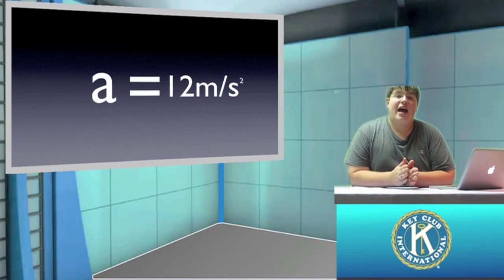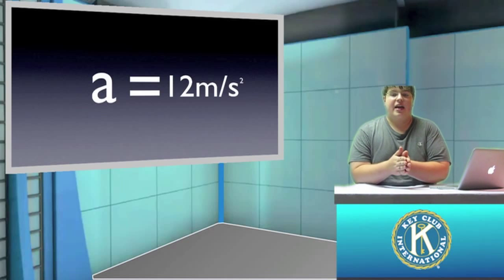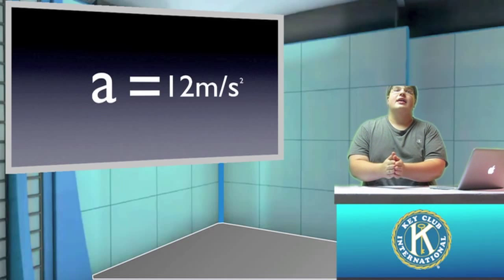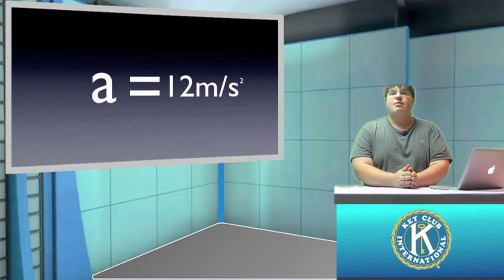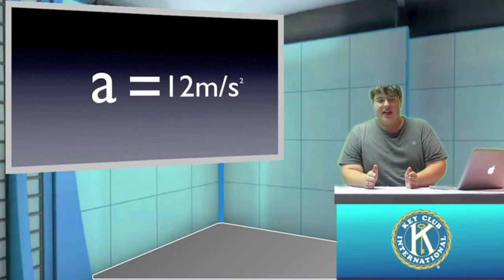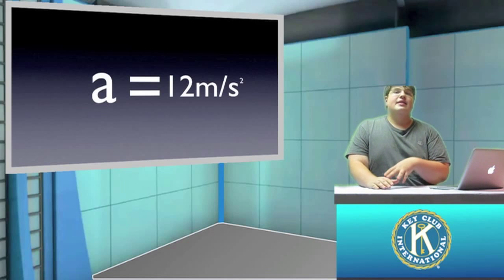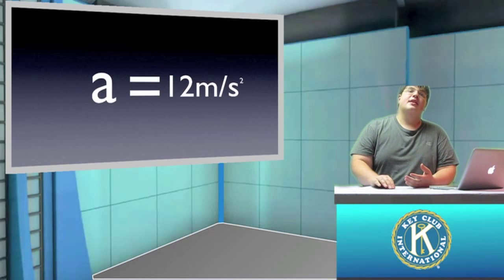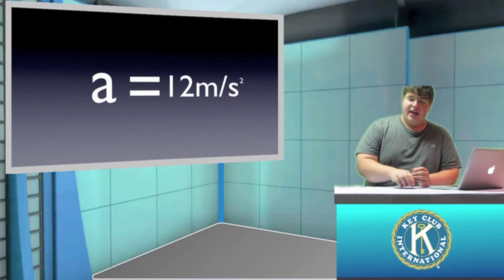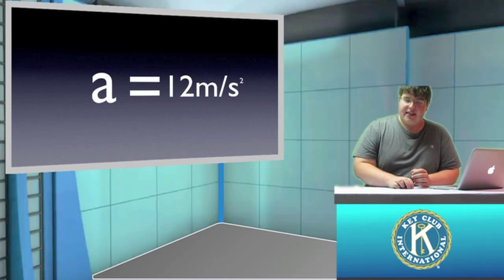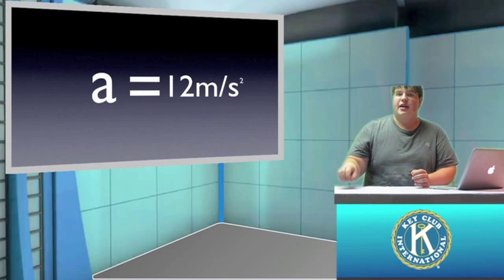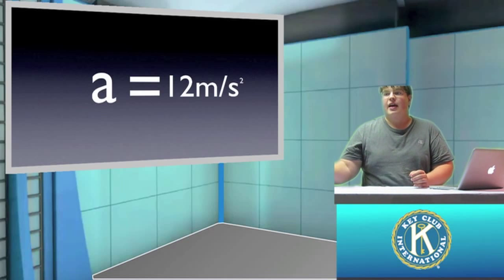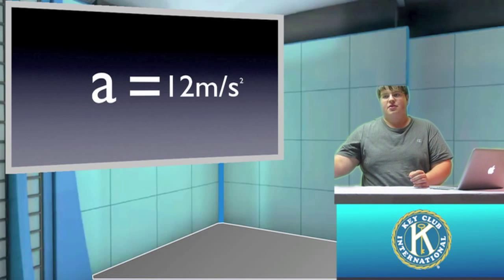So you see every increase of 1 second results in an increase in velocity of 12 meters per second. And that's essentially all acceleration is — the velocity continually increases at a constant interval.